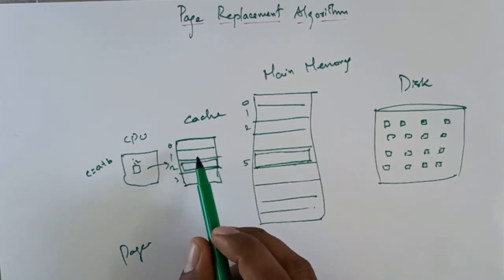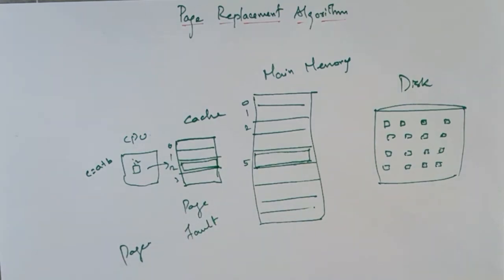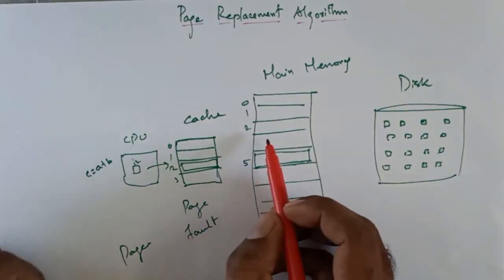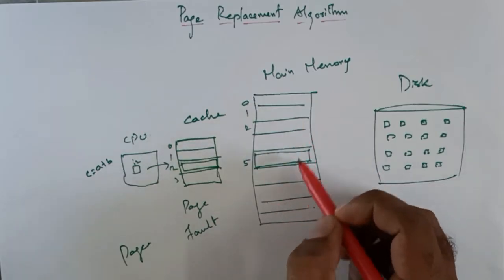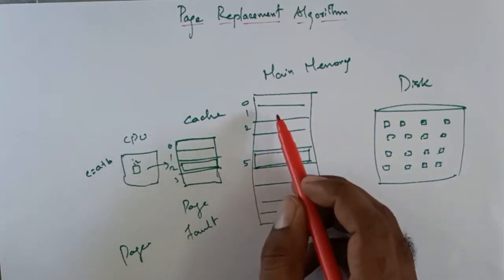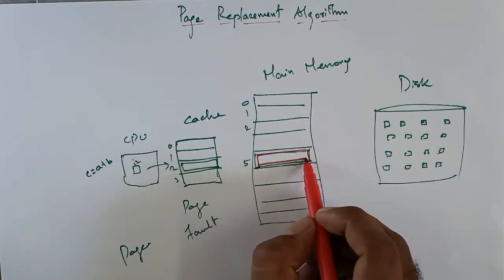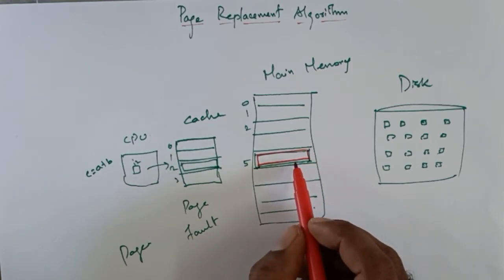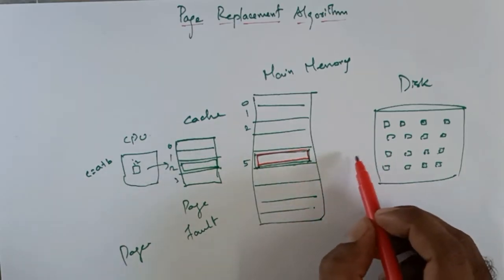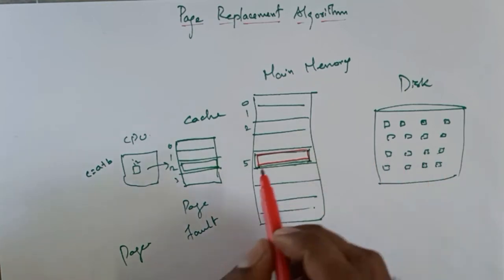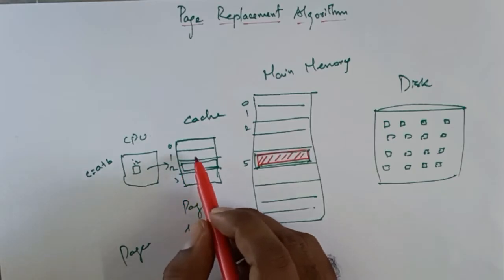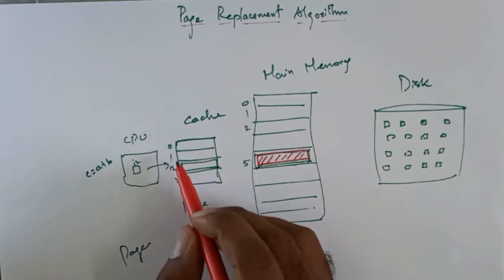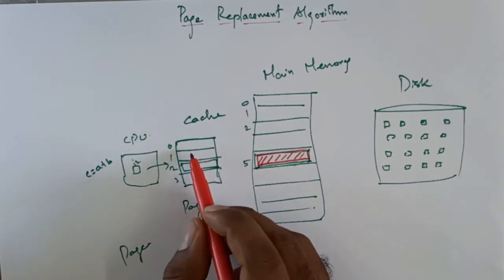This is the data. In a memory block, if you look at the cache, the data is not available. We will find the cache. Here is the cache. If you need to find the cache, then next — because we are on the page, there are major parts. This is the page.